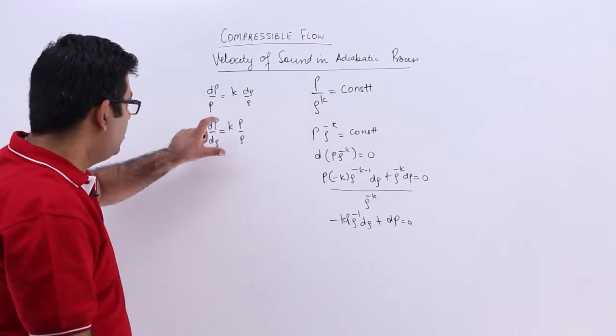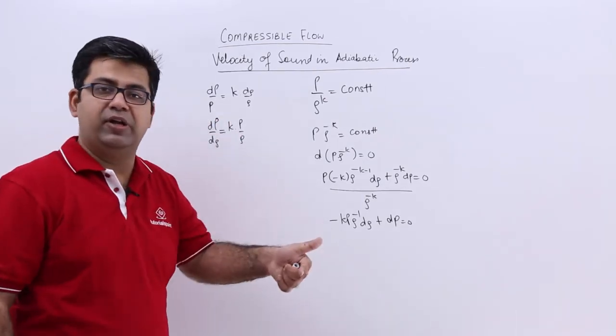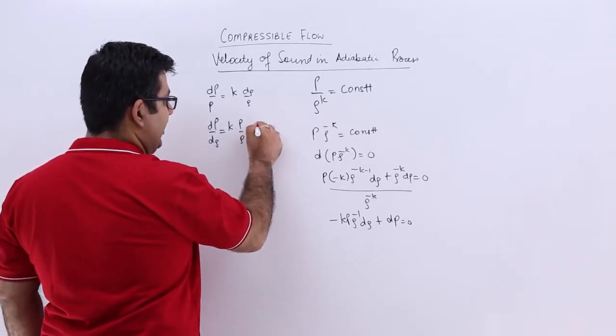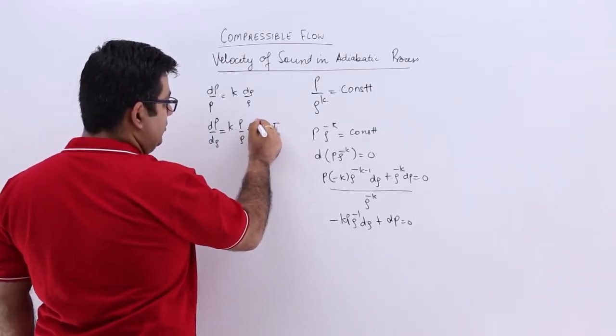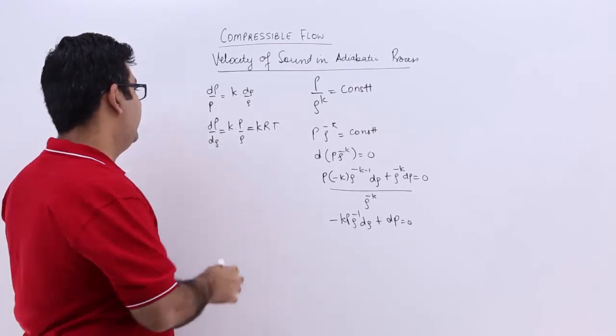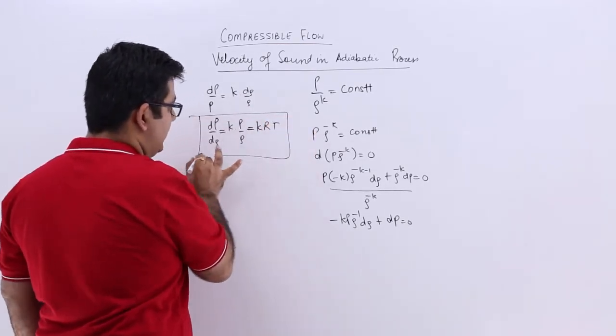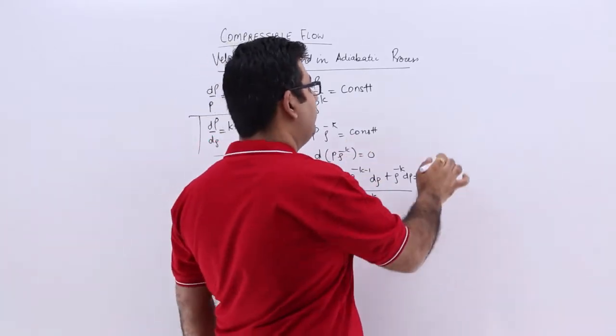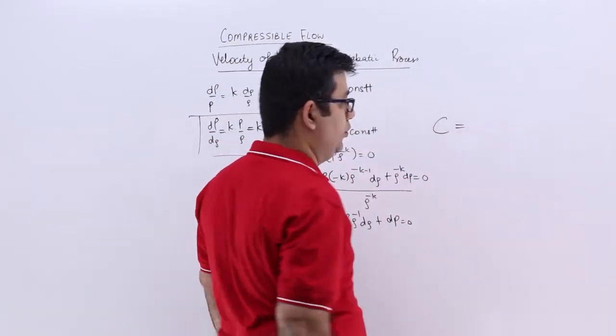Now p upon rho is RT. So we will write it as k times RT. Some books use gamma as the symbol for k. Do not get confused, it is the adiabatic index.